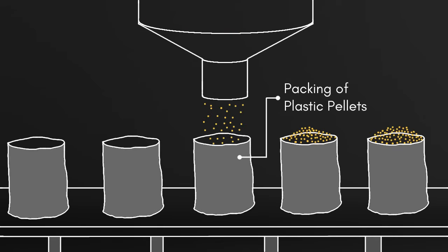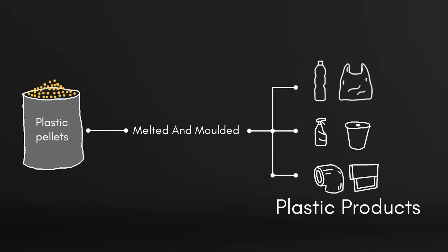These plastic pellets are sent to other factories. They melt the pellets and mold them into a wide range of plastic products. And this is the story of how plastic is made from crude oil.